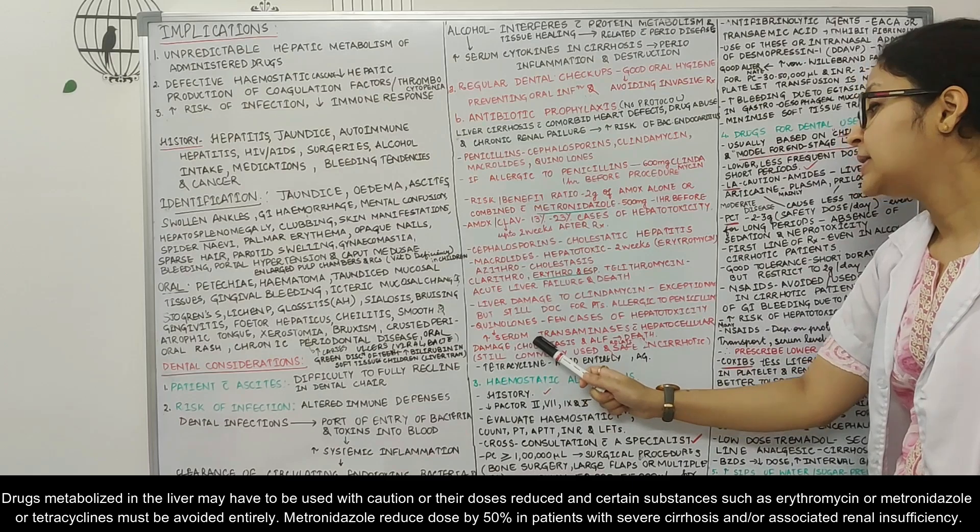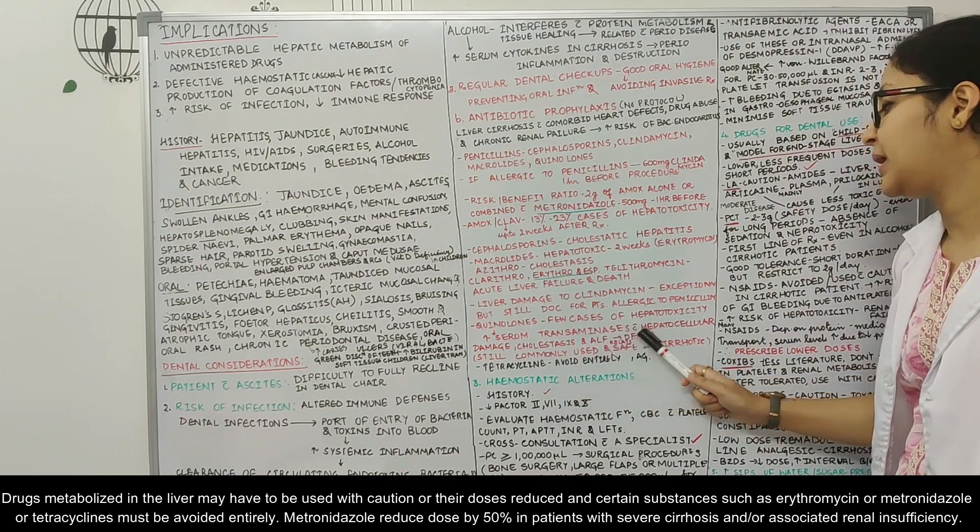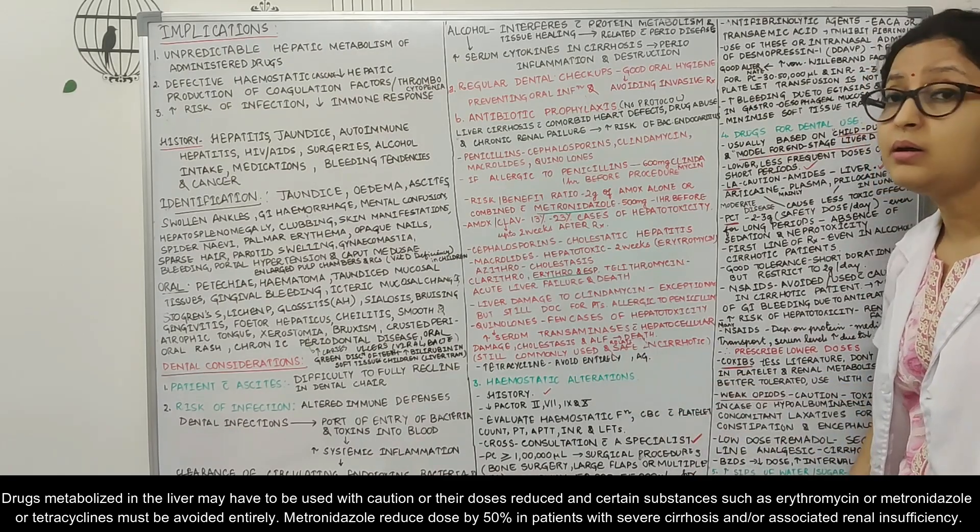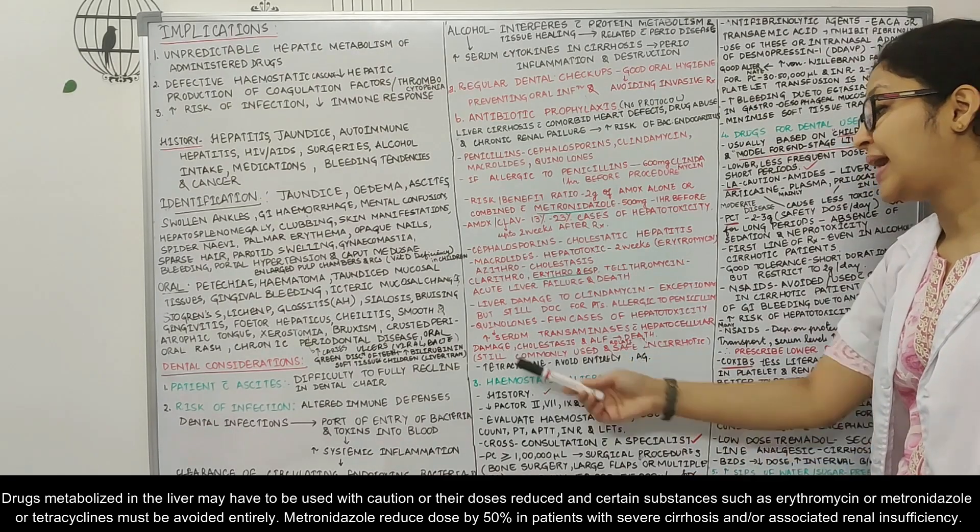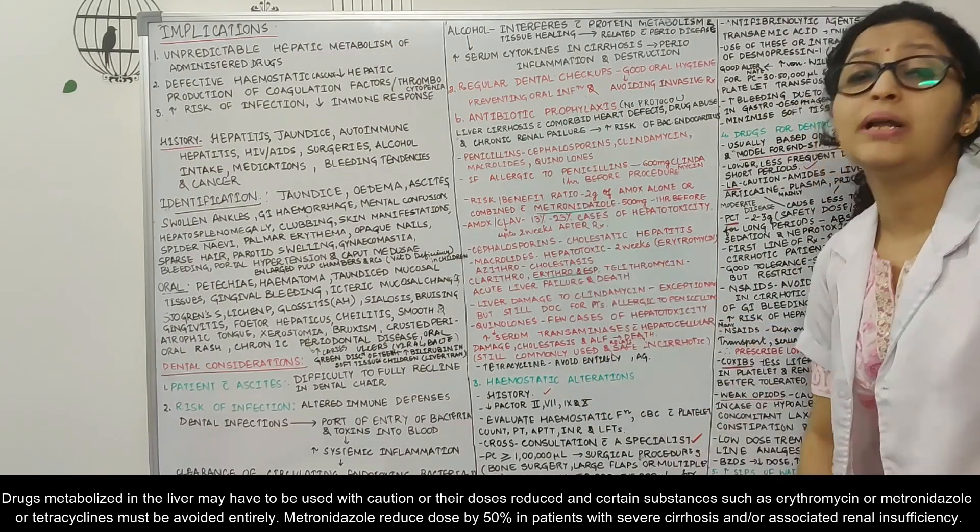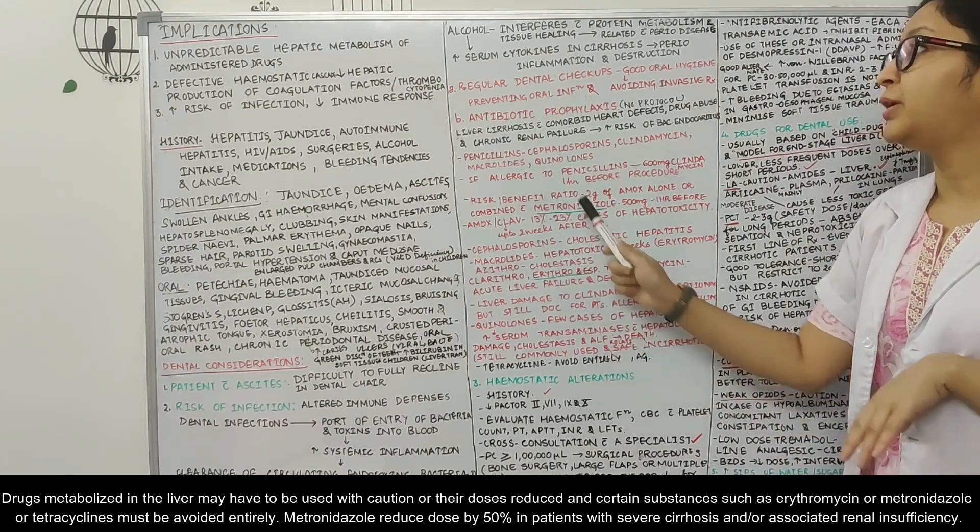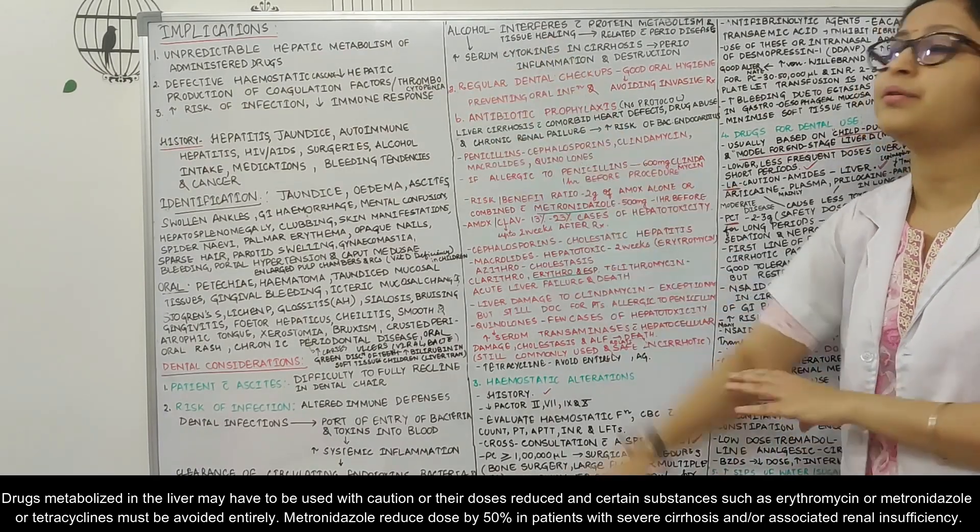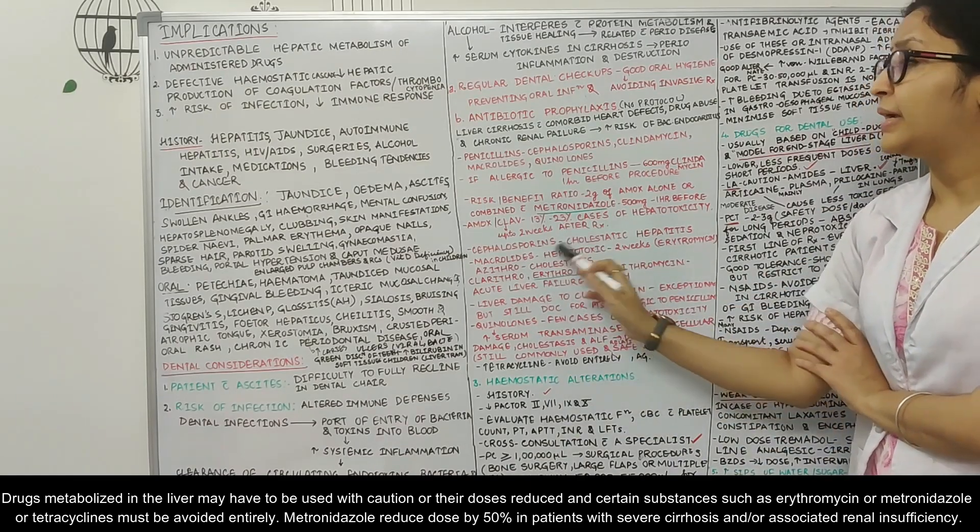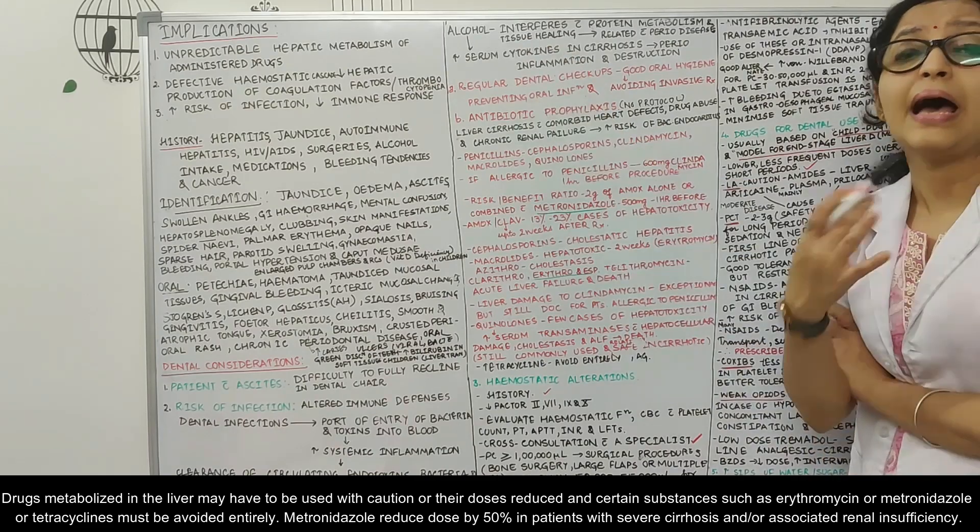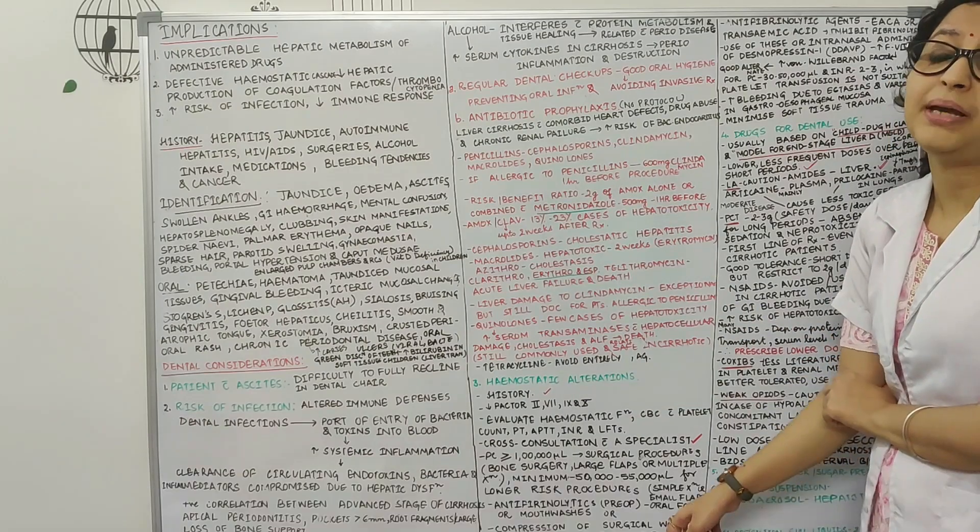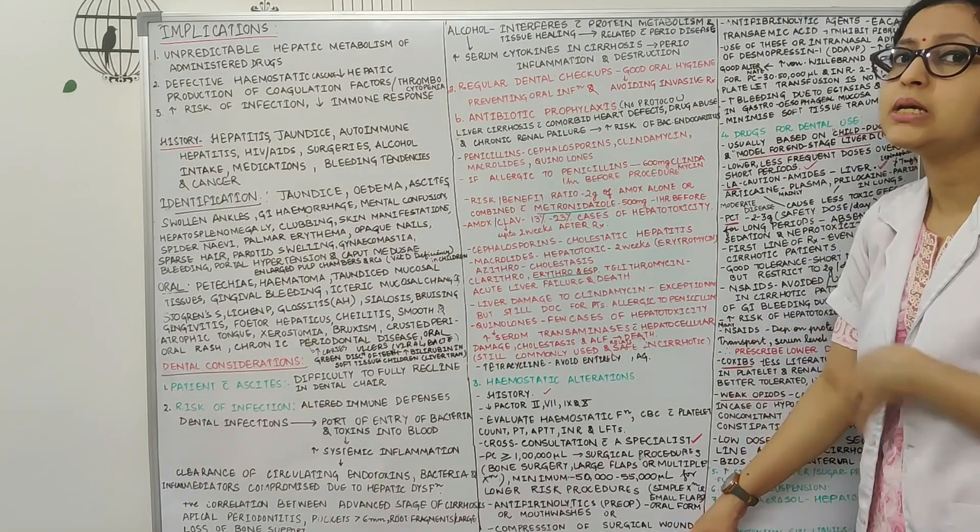Then even quinolones, there are few cases of hepatotoxicity that is seen in case of quinolones and there can be increased serum transaminase and hepatocellular damage or cholestasis and acute liver failure that can be associated with quinolones. And tetracycline should also be avoided entirely. Even metronidazole has to be avoided because it can produce serious reactions apart from its regular side effects, it can produce serious reactions with patients who are taking alcohol. But even though it has to be avoided, metronidazole can still be considered in few cases considering the risk-benefit ratio in a patient, it can vary from case to case.